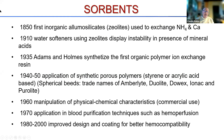The history of sorbents goes back to 1850, when first inorganic alumino-silicates were used to exchange ammonia and calcium. Then through a series of evolutions — water softeners, ion exchange resins, and application of porous polymers to remove specific substances — in the year 2000 and afterwards, improved design, coating, and increased hemocompatibility allowed the use of sorbents in blood purification techniques such as hemoperfusion without major adverse events.